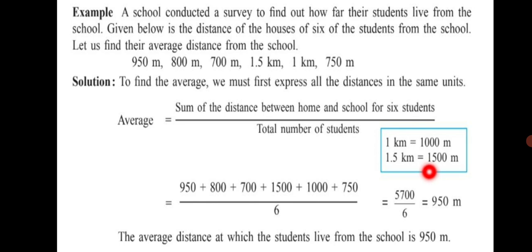Accordingly we will write average equals sum of the distance between home and school for 6 students upon total number of students. So we will add all these numbers in meters: 950 plus 800 plus 700 plus 1500 plus 1000 plus 750 divided by 6 equals 5700 upon 6, equals 950 meters. The average distance at which the students live from the school is 950 meters.